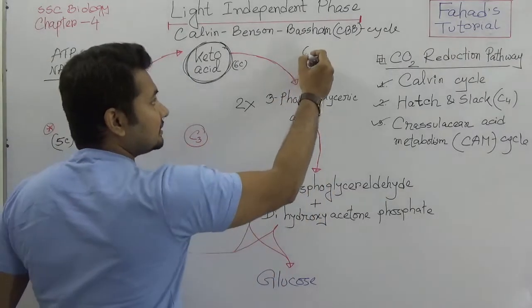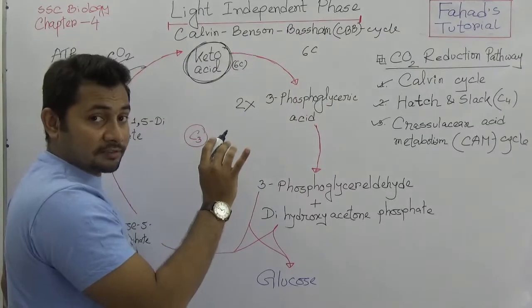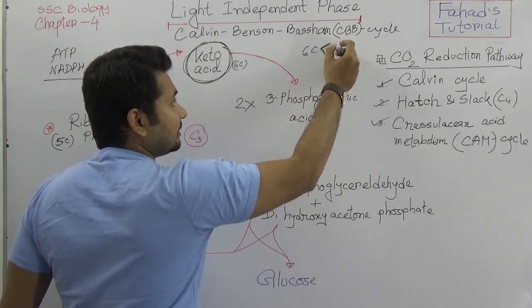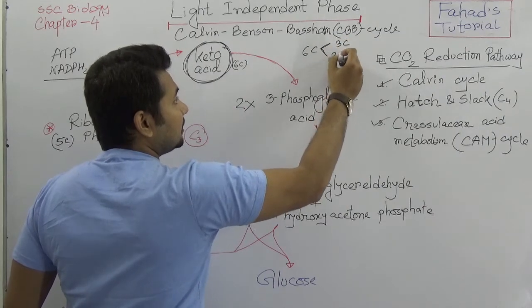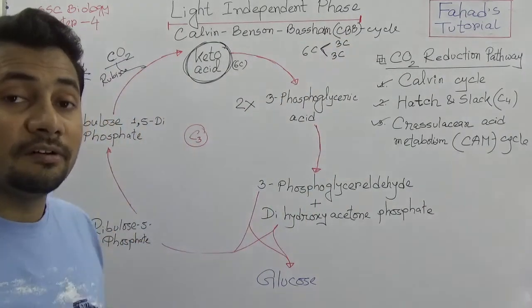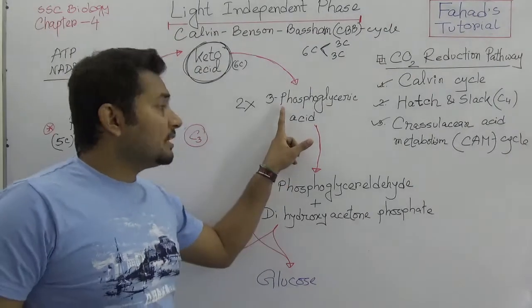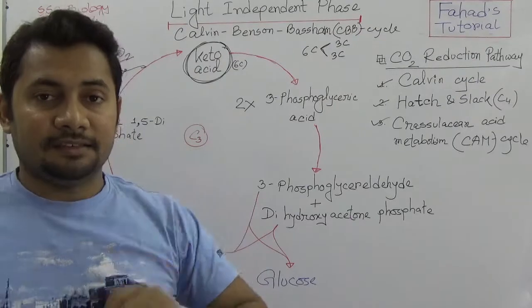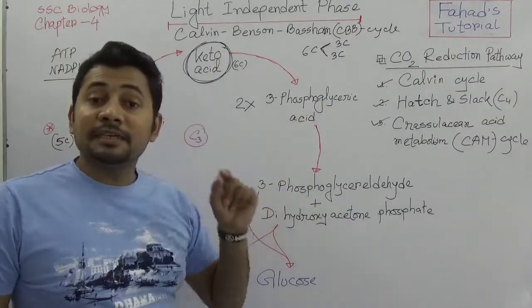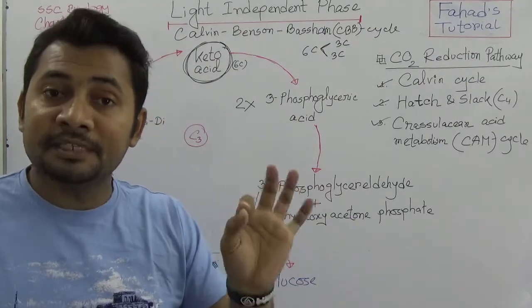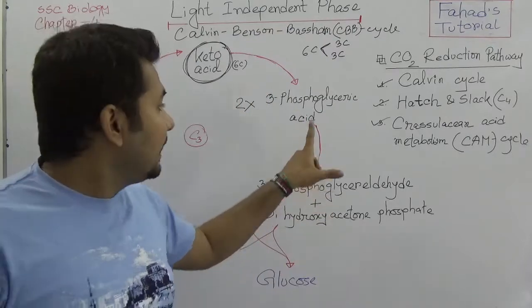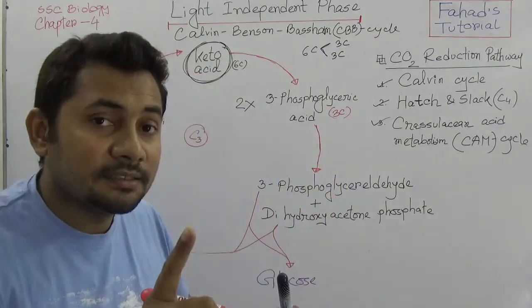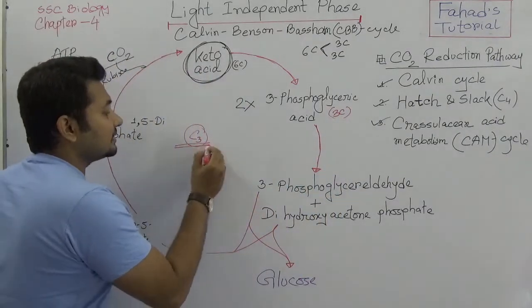When the 6-carbon ketoacid dissociates and breaks down, it produces 2 molecules of a 3-carbon compound. This 3-carbon compound is phosphoglyceric acid. As phosphoglyceric acid is the first permanent compound of this cycle and it is a 3-carbon compound, that is why this cycle is called the C3 cycle.